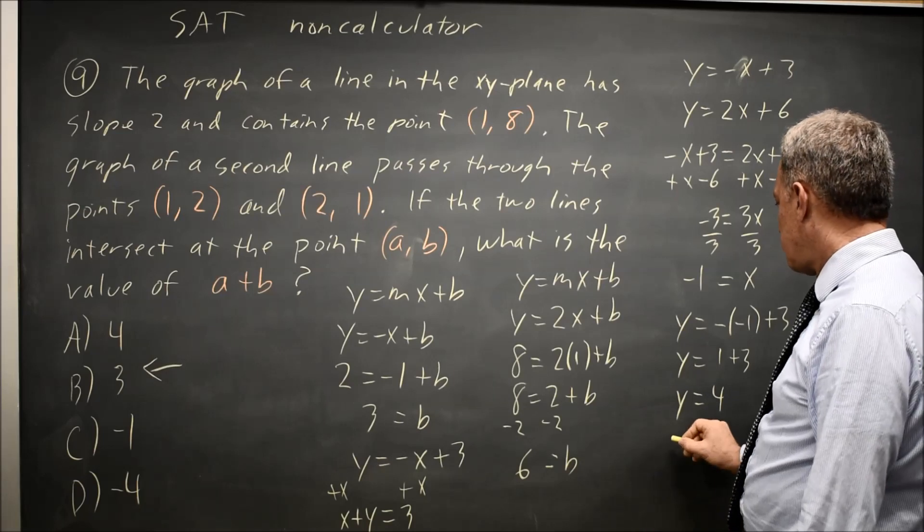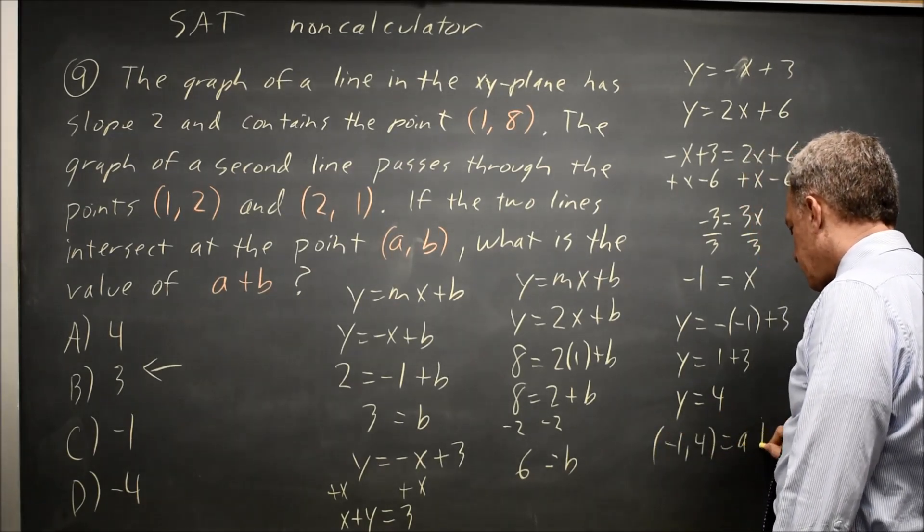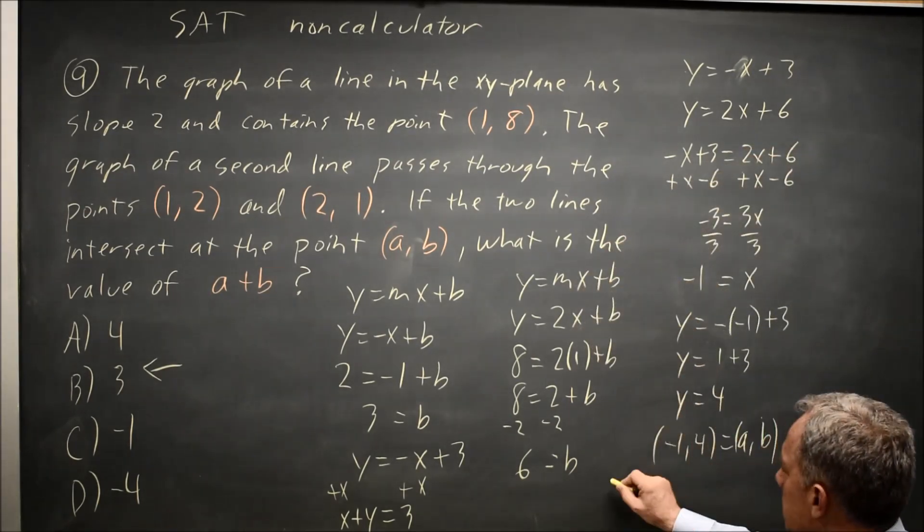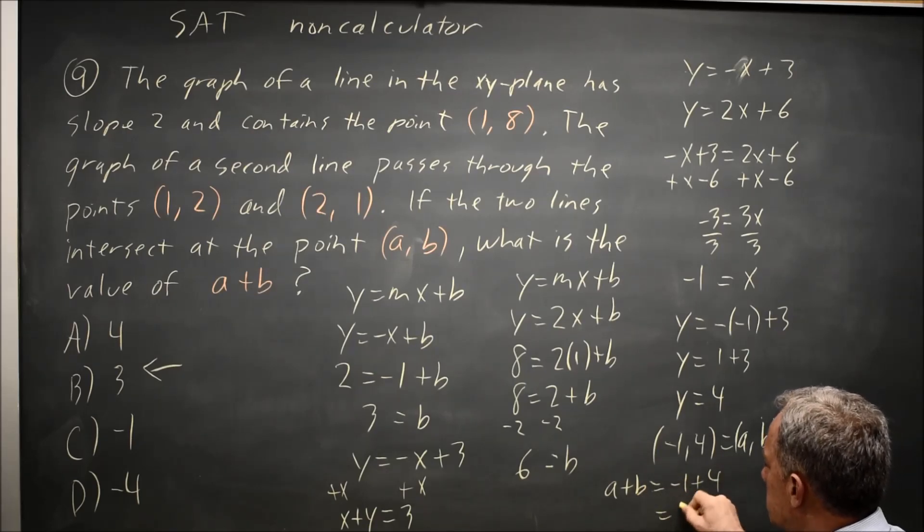They're asking for, given the point (-1, 4) equals (a, b), they're asking for a plus b. a plus b equals negative 1 plus 4, which is 3.